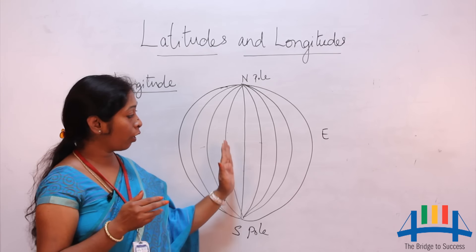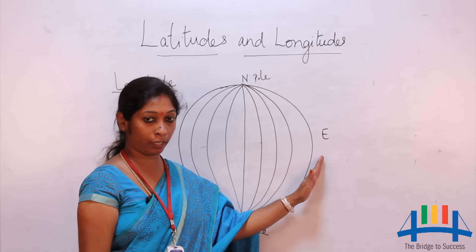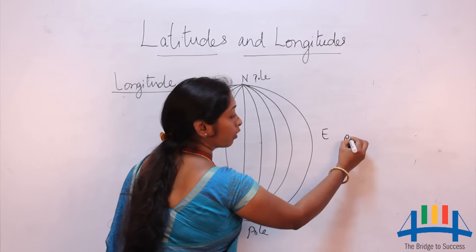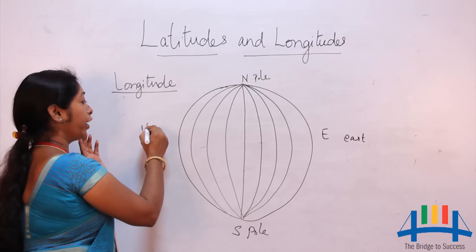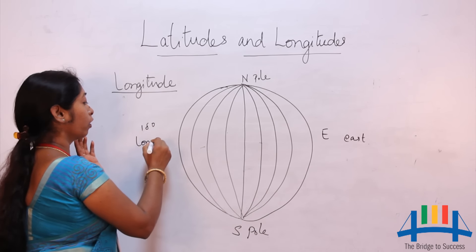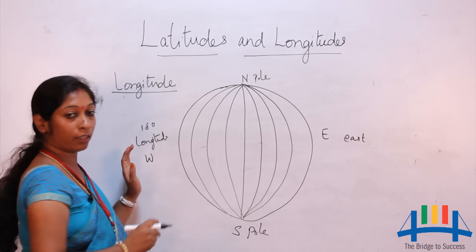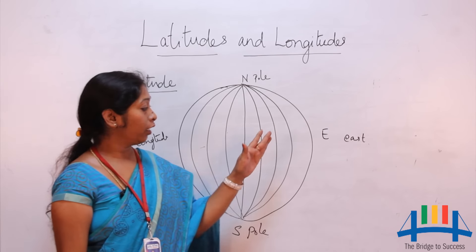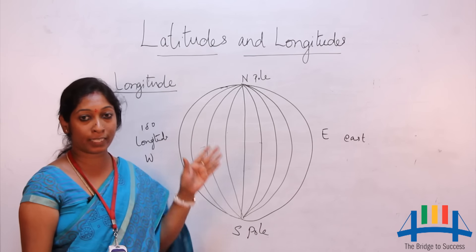From the prime meridian, we have 180 longitudes towards the east, followed by E which stands for east. Towards the west, we have 180 longitudes followed by W for west. Both the 180-degree east longitude and 180-degree west longitude fall on the same line.